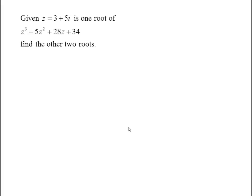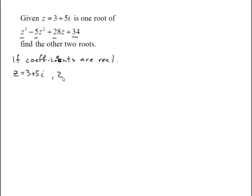Given that z equals 3 plus 5i is one root of z cubed minus 5z squared plus 28z plus 34, find the other two roots. Because the coefficients are all real — that's the most important thing — by the conjugate root theorem, if z equals 3 plus 5i, then z also equals 3 minus 5i.